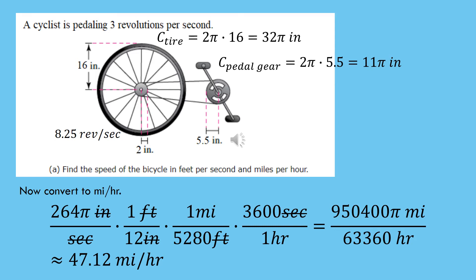Now we need to convert seconds to hours. There are 3,600 seconds in one hour, so multiplying by 3,600 seconds over one hour cancels the seconds. That leaves us with 264 pi times 3,600 in the numerator and 12 times 5,280, which equals 63,360, in the denominator. Reducing and rounding that off as a decimal gives us 47.12 miles per hour — a fairly reasonable racer-speed pace.